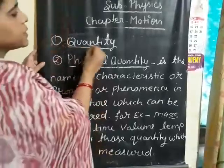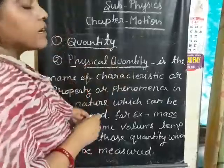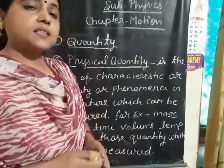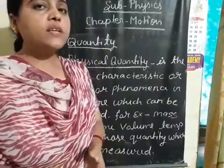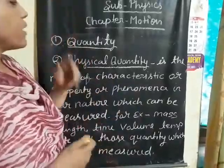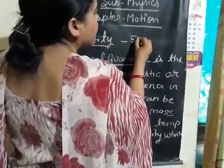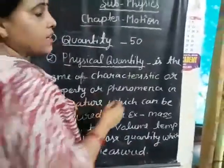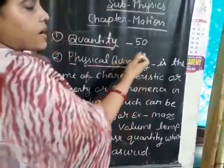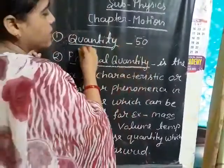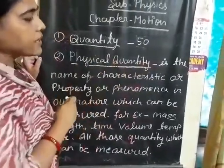Now, what is the difference between quantity and physical quantity? The number of students in a class, marks obtained by a student, and the salary of a teacher are called quantities. Quantity is represented in numbers. This is called quantity. And the other is physical quantity.